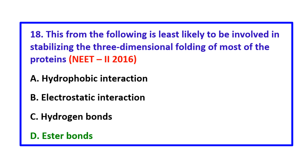Question: Which of the following is least likely to be involved in stabilizing the three-dimensional folding of most proteins — the correct answer is ester bonds.